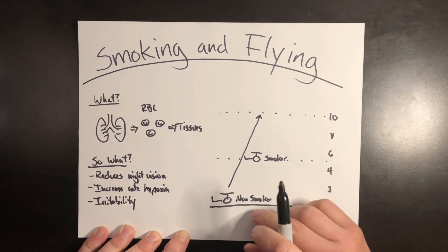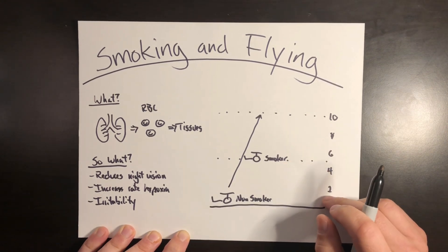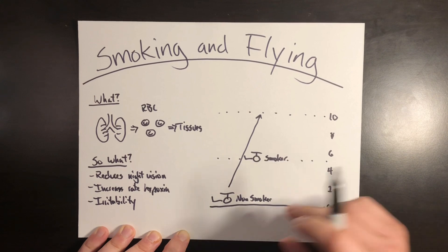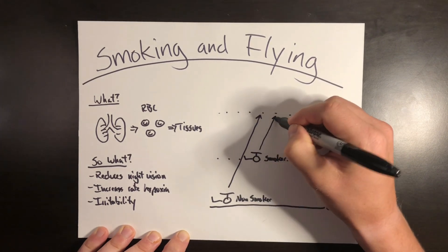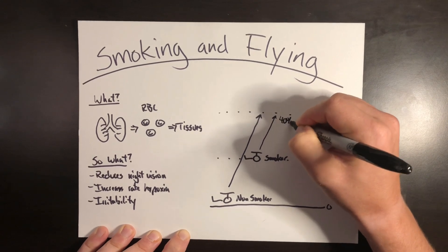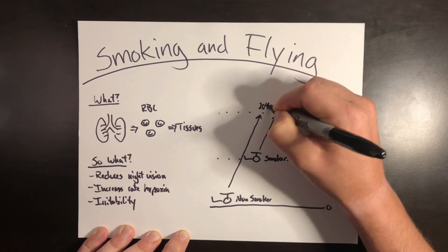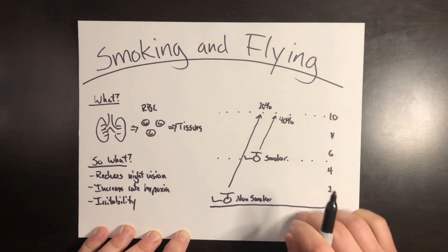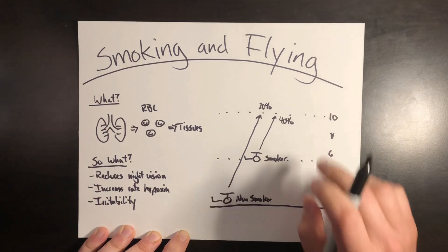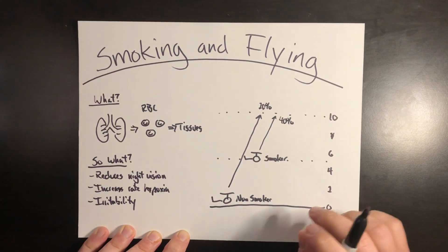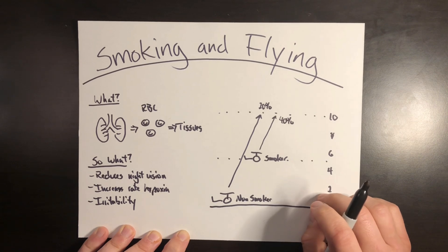But a smoker who starts at sea level, they're already starting at a 20% reduction in night vision. If they were to go all the way up to 10,000 feet, they're going to be looking at roughly a 40% reduction compared to the 20% reduction in night vision if they're operating at 10,000 feet.